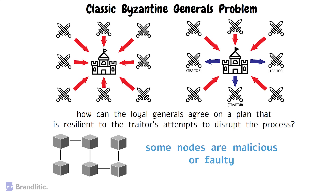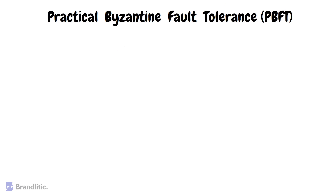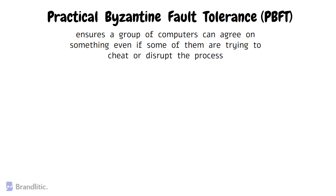So, that's the problem. Now, what about the solution? One solution to the Byzantine generals problem is Practical Byzantine Fault Tolerance, or PBFT. In a nutshell, PBFT is an algorithm that ensures a group of computers can agree on something even if some of them are trying to cheat or disrupt the process.